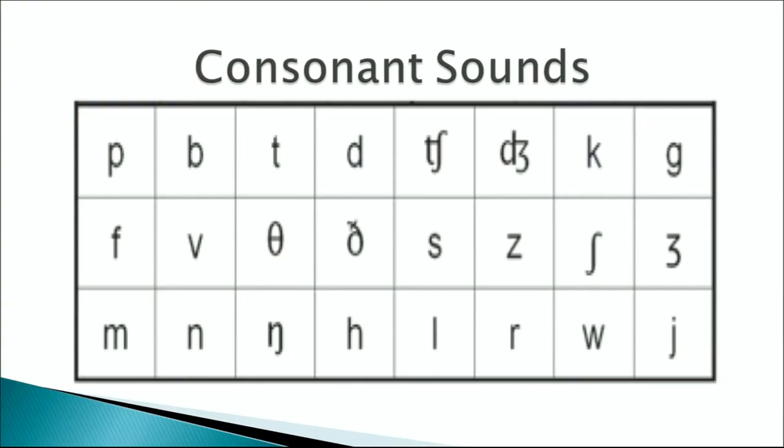The h sound is as in horse, hover, hare. The l sound is as in low, level, lamp, lamb. The r sound is as in ran, run, roll. The w sound is a rounded semi-vowel, as in watch, water, where, why. The IPA j symbol actually stands for the ya sound, as in yes, yam, yacht, and yesterday. These were the consonant sounds.